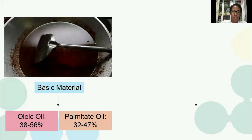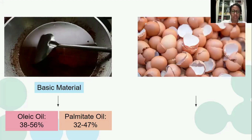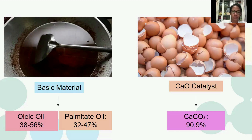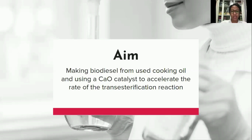In the transesterification stage, the reaction tends to take a long time, so it requires a catalyst. In this study, researchers use a CaO catalyst made from eggshells, where the eggshells contain CaCO3, which affects the rate of the transesterification reaction. So the aim of the research is making biodiesel from used cooking oil and using a CaO catalyst to accelerate the rate of the transesterification reaction.